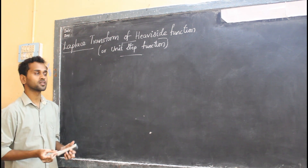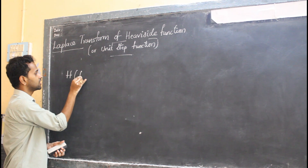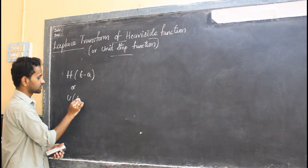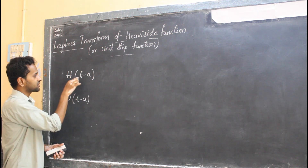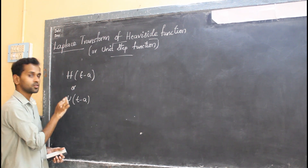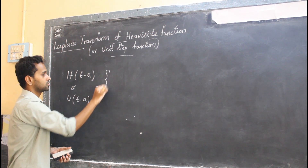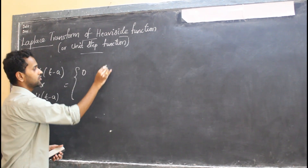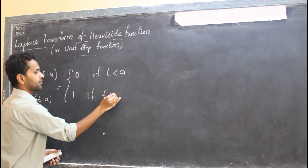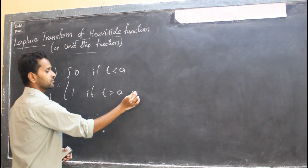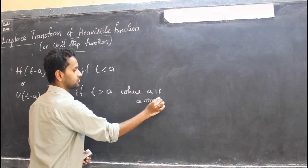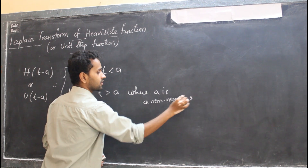What is the Heaviside function? It is denoted as H(t − a) or u(t − a). It is defined as 0 if t is less than a, and 1 if t is greater than a, where a is a non-negative constant.